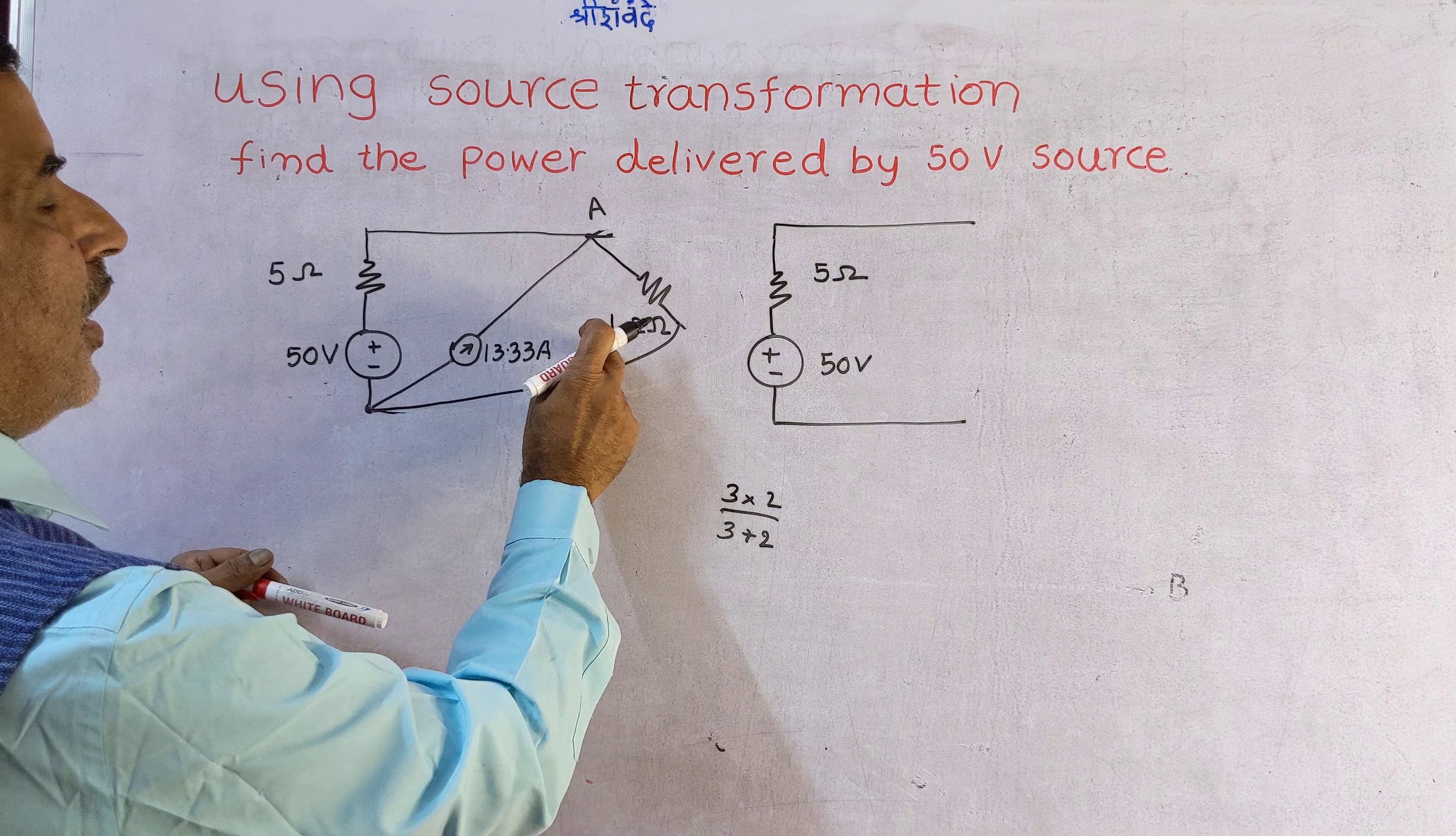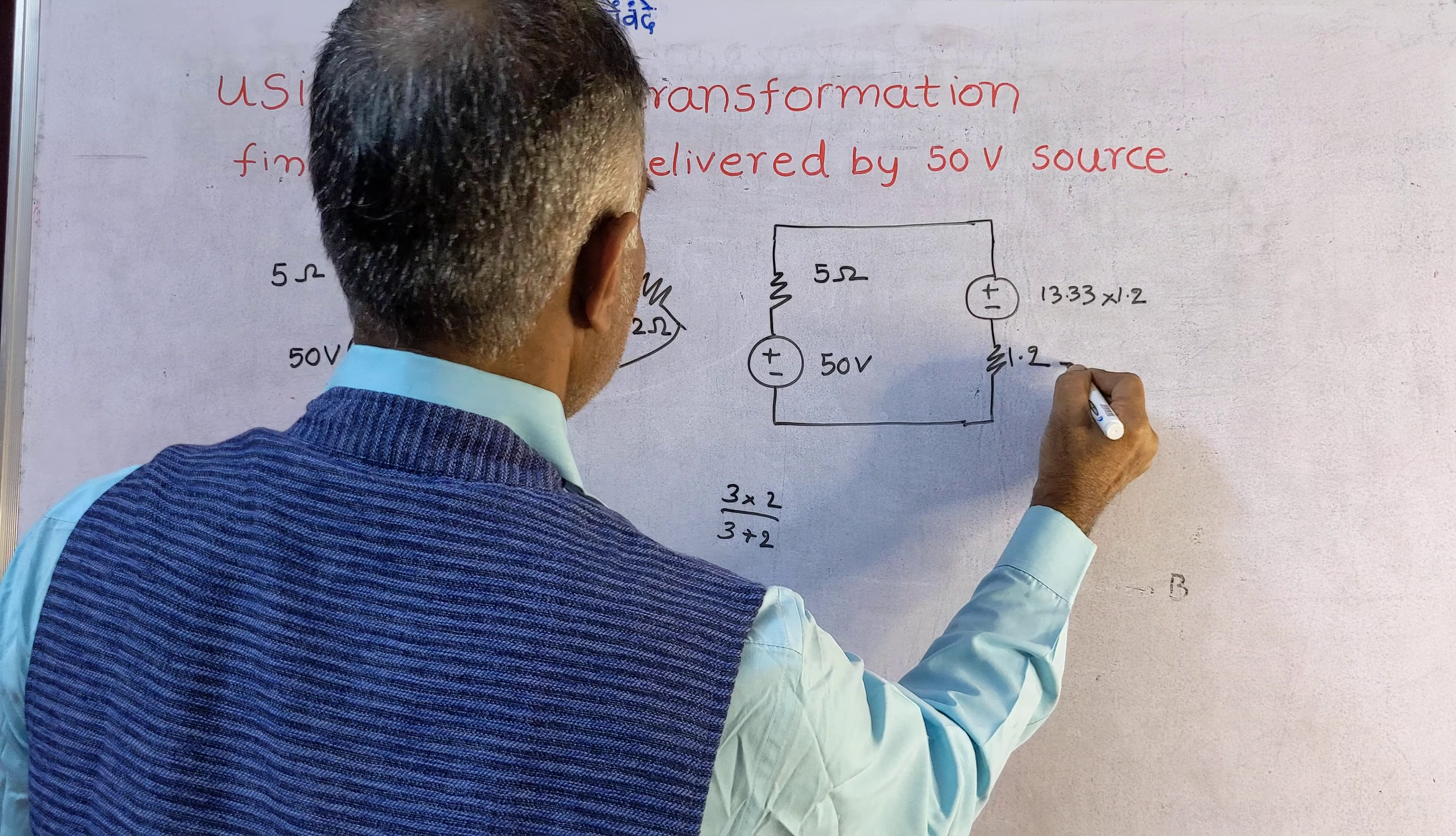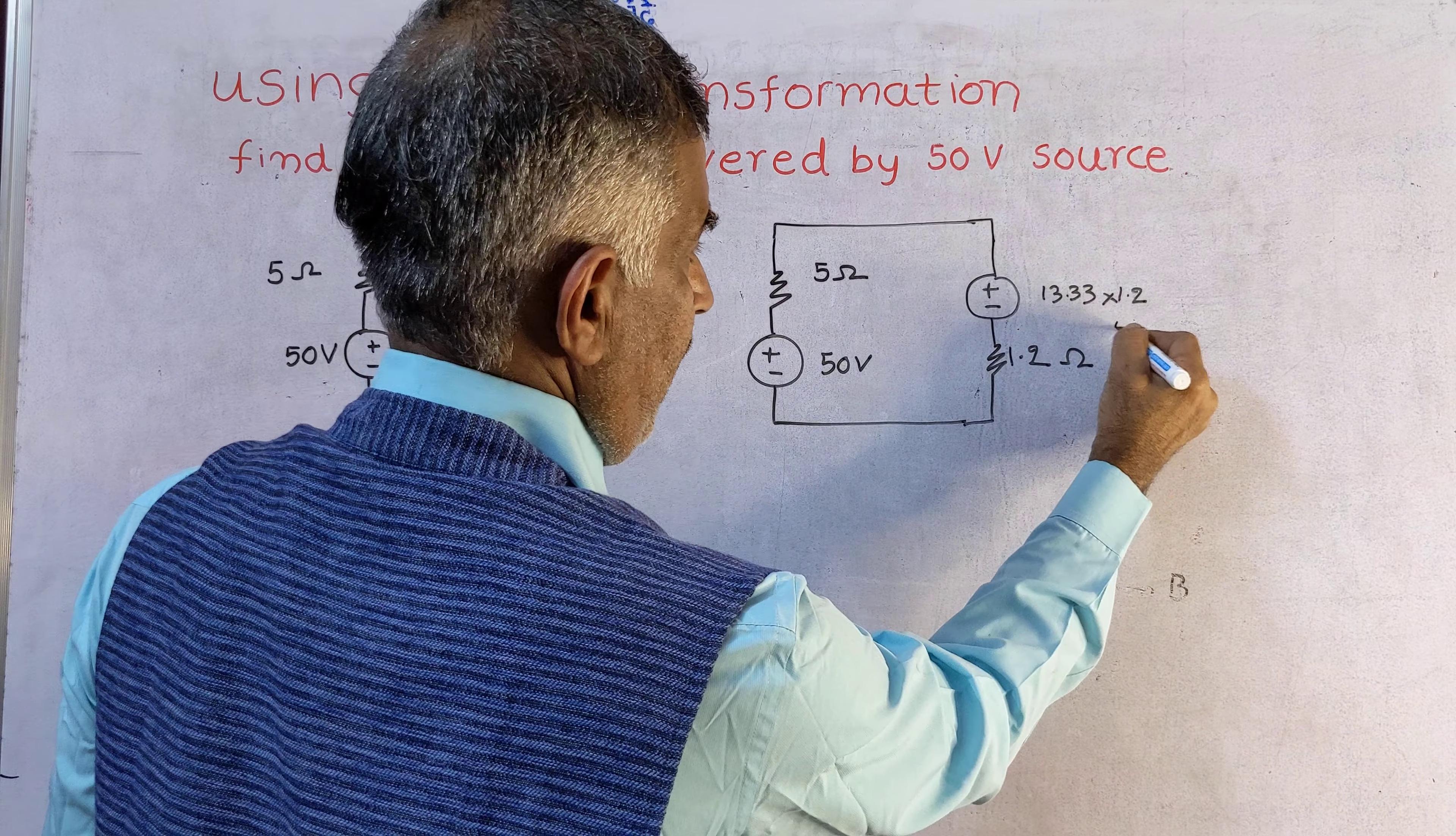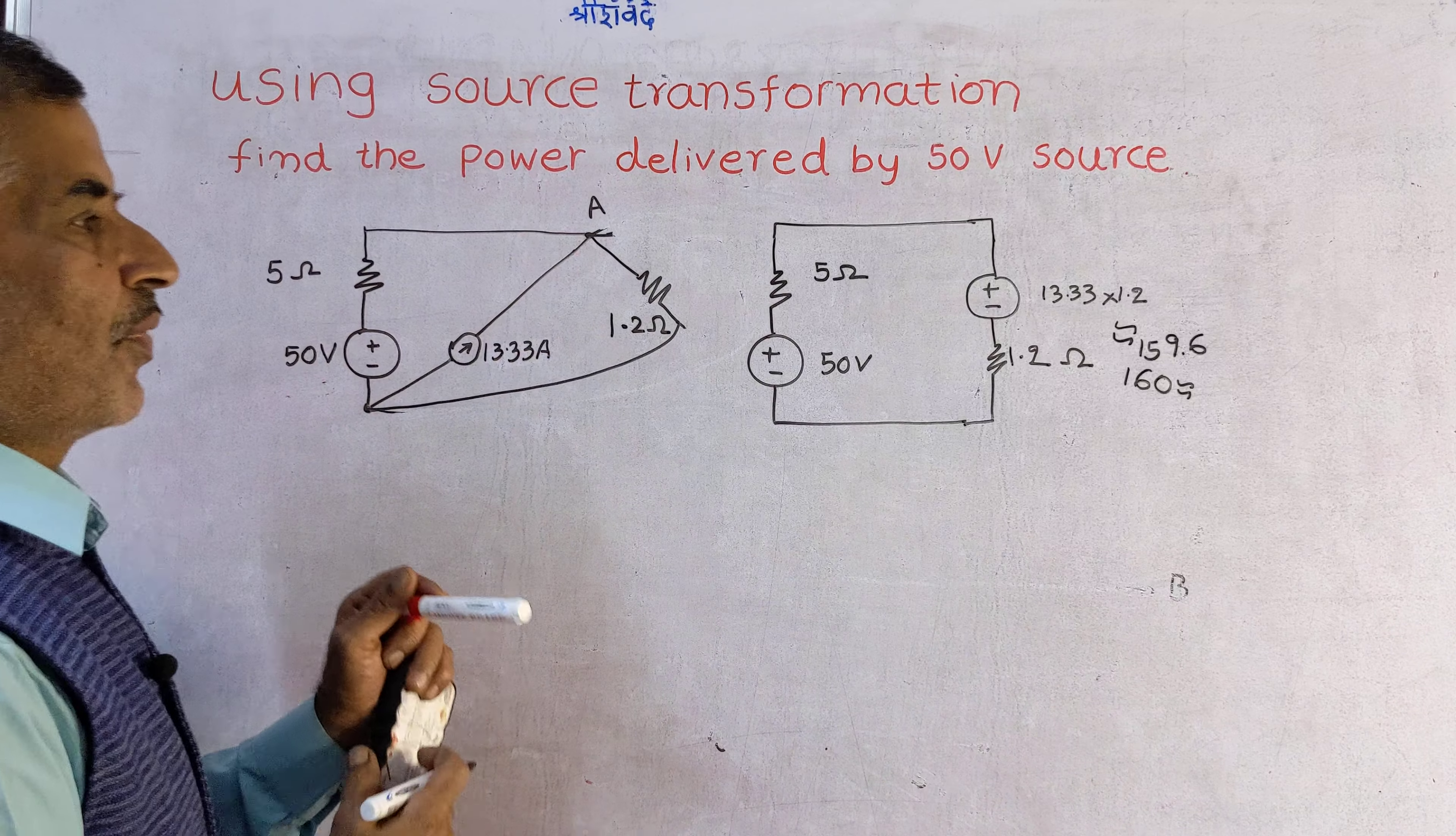1.3 ohms into 1.2 in series with 2 ohms, 1.2 ohms. This gives 159.6, say 160, let us approximately take 160. Now 160.